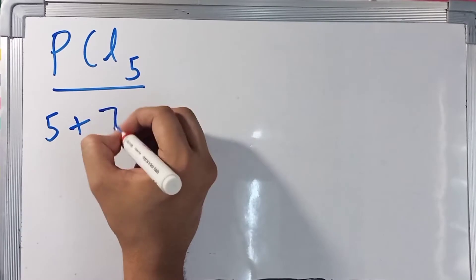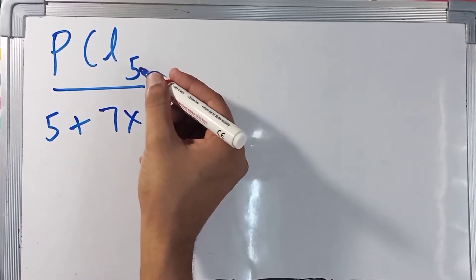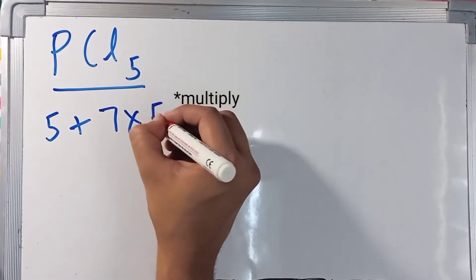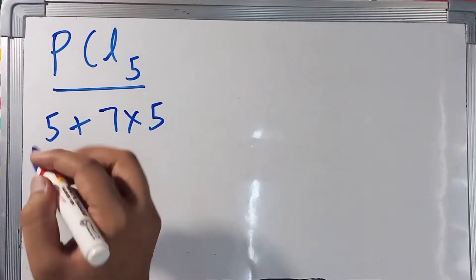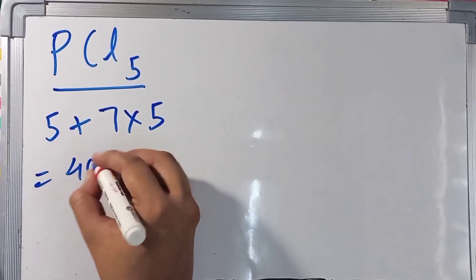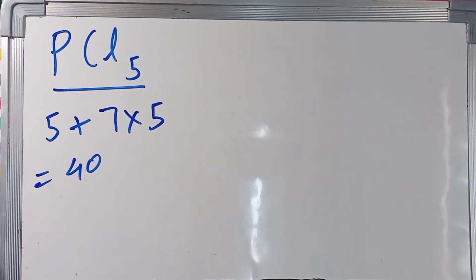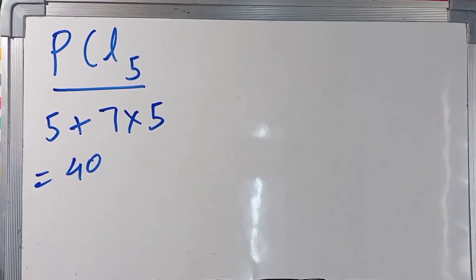But we have five atoms of chlorine, so we are going to divide seven by five, which comes out as 40. Now this value 40 is greater than 8.